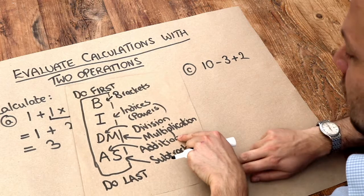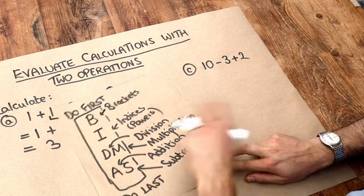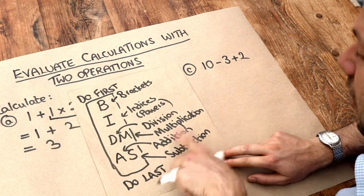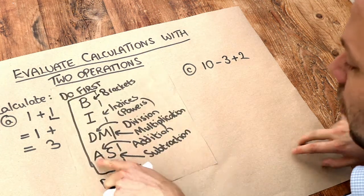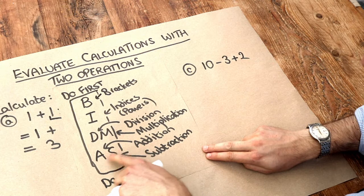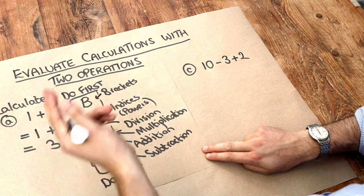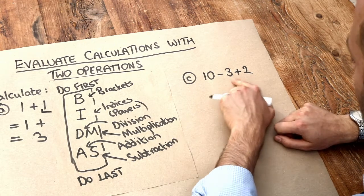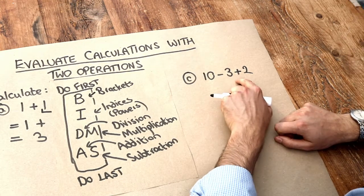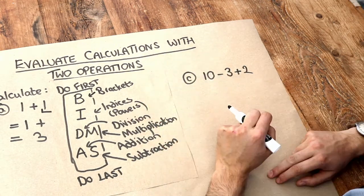Now you might have wondered why I wrote down the addition and subtraction on the same level. And that's because neither takes priority over the other. So you might think with this one, well, addition comes before subtraction because A comes before S in BIDMAS. And you might think, well, I do the 3 plus 2 first, which is 5, and then do 10 minus 5, which is 5. But it's not 5.